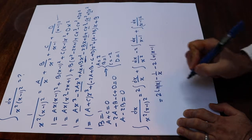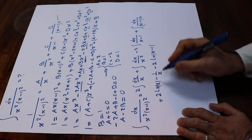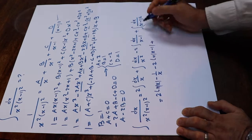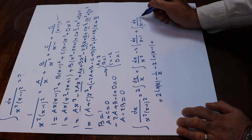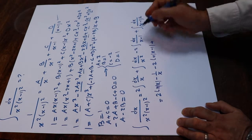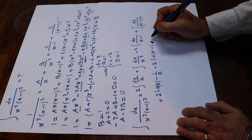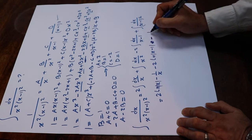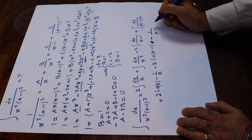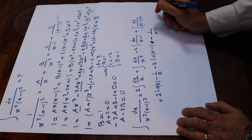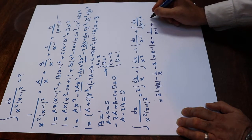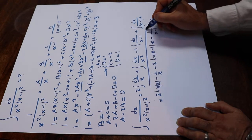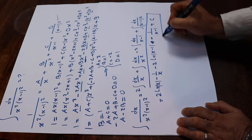You need absolute value signs here as well. Plus the integral of dx over (x minus 1)² equals minus 1 divided by (x minus 1), plus C, which is the constant of integration. And that is the solution to our integral.